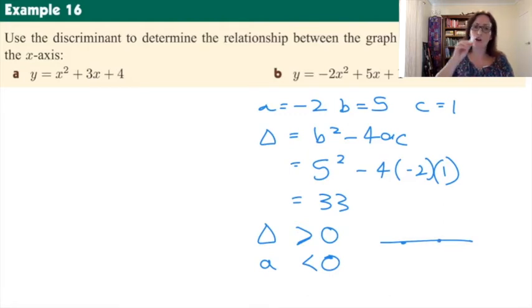And which way around would this graph be? Concave up or concave down? Well a is less than 0, so it's a negative number. Negatives are sad. And so it will be the sad shape which would be like that.